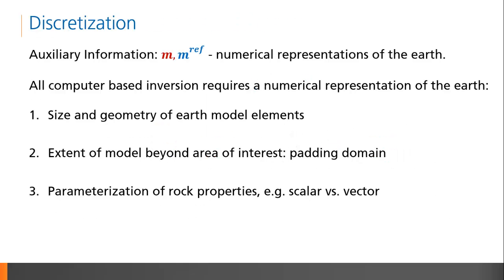The numerical representation of the earth, given by the predicted and reference models, implicitly contain auxiliary information as well. The discretization of the earth is controlled by the user. Parameters, such as cell size, expansion ratio, and padding cells, all impact the inversion result. In addition, users can specify whether the rock properties being modeled are parametrized as scalars or vectors.